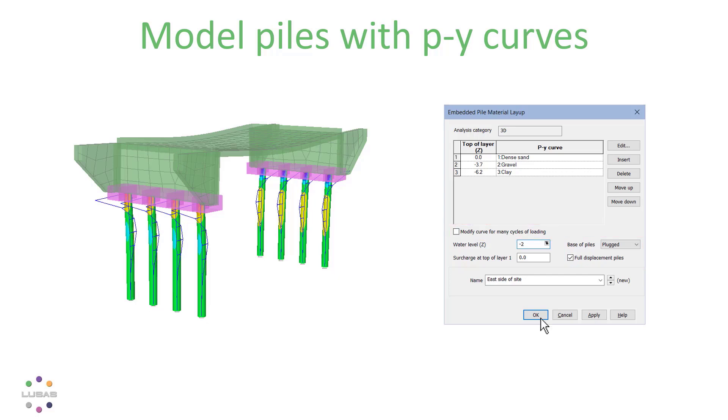The PY curves for each node in each pile are determined from its location within the layers you defined, and you can view the curves at any node using the one-click report.